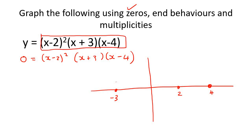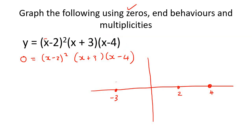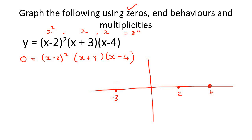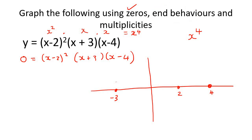The way we do end behavior is we need to imagine what the largest exponent would be for the x's — you don't have to multiply all the brackets out. This x is to the power of 2, this one is just x, and this one is just x. Multiplied together, you'd eventually have x⁴. So that would be the largest exponent, and that's the only one you need to look at for end behavior.